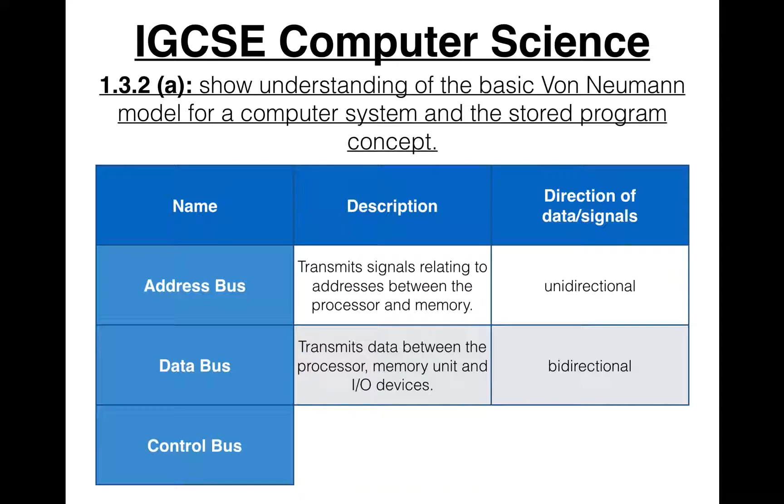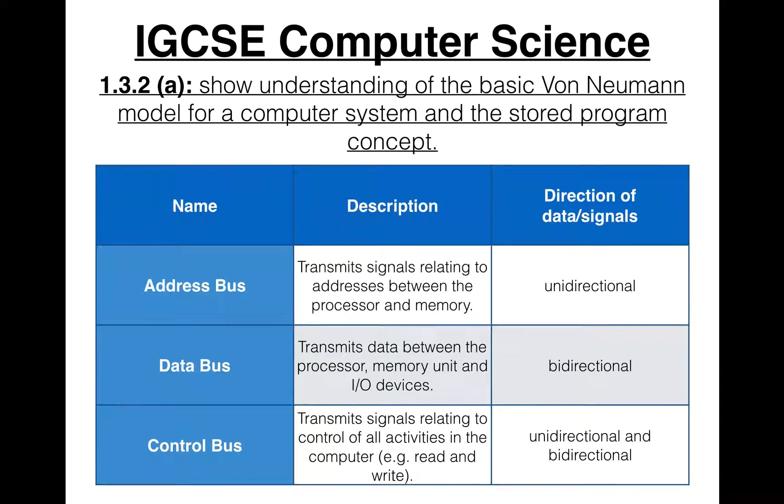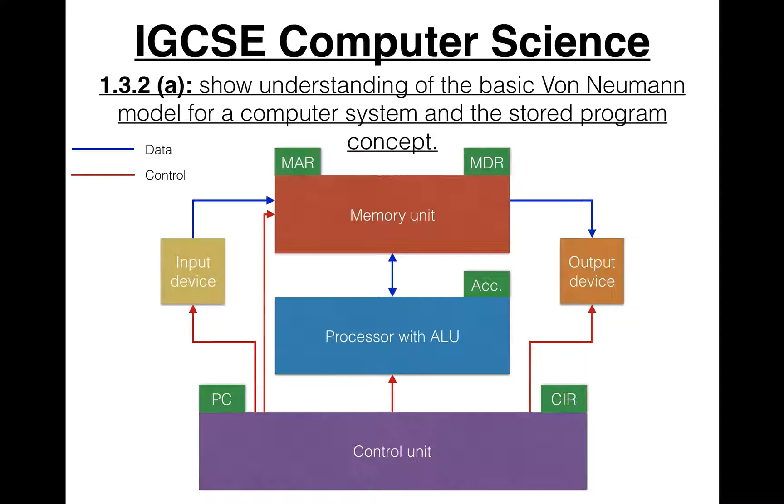The control bus transmits signals relating to the control of all activities in the computer. Like the read and write operations, which we're gonna look at later in this video. And this is actually considered to be unidirectional and bidirectional because of the internal connections in CPU.